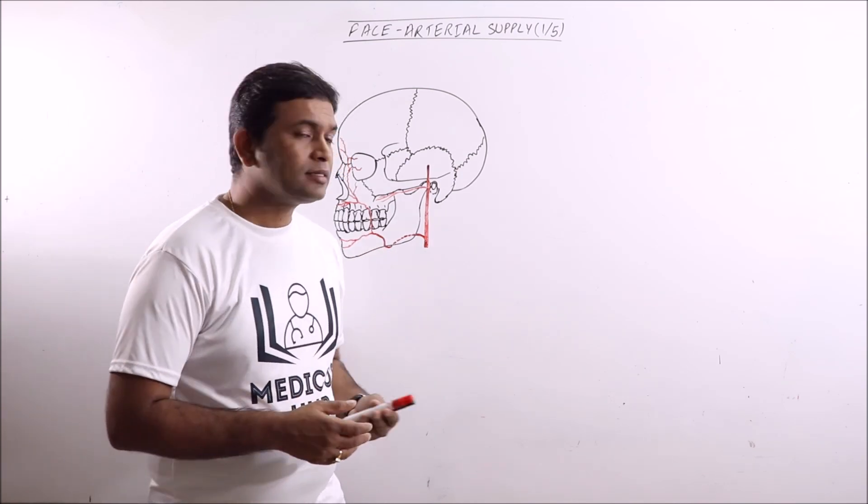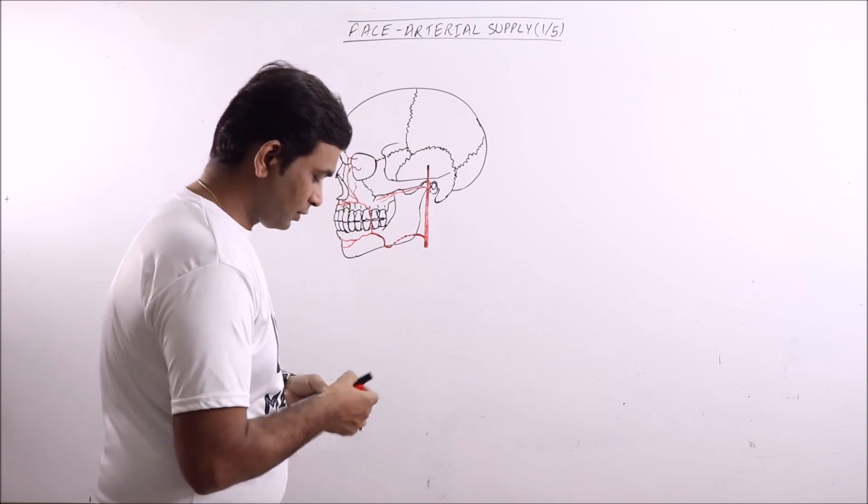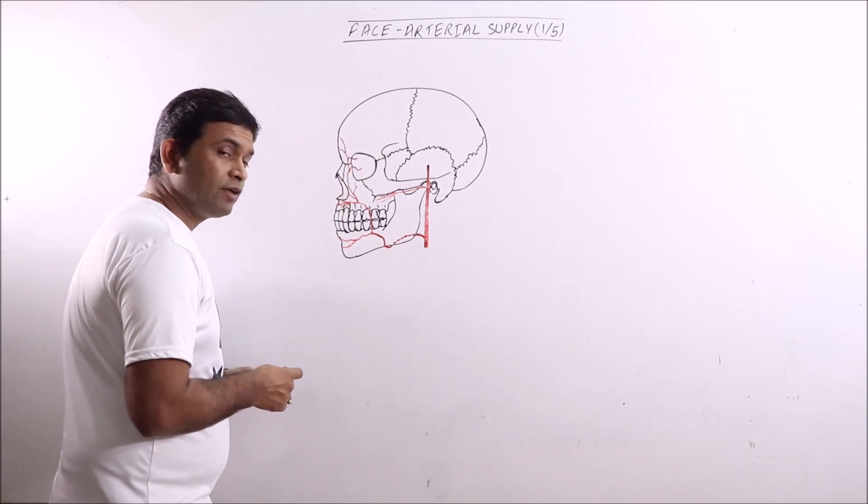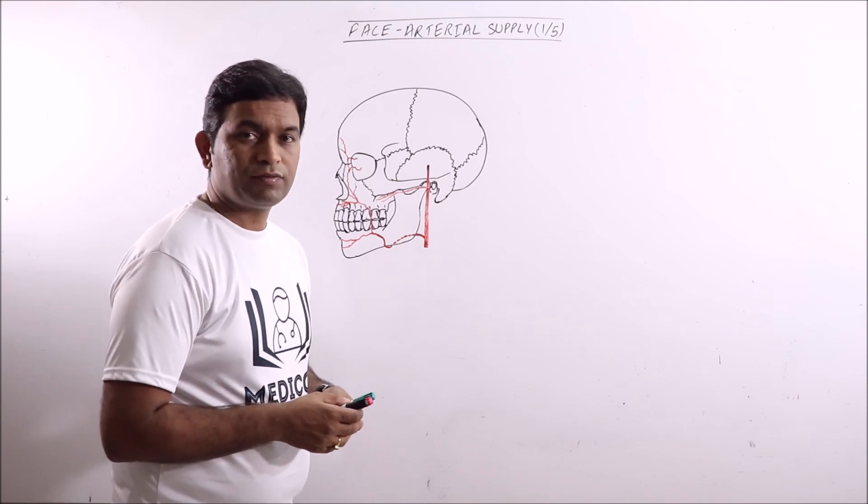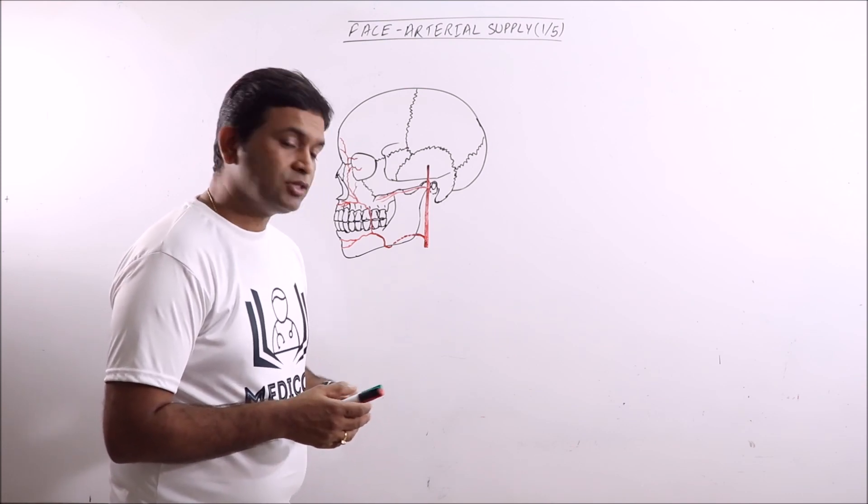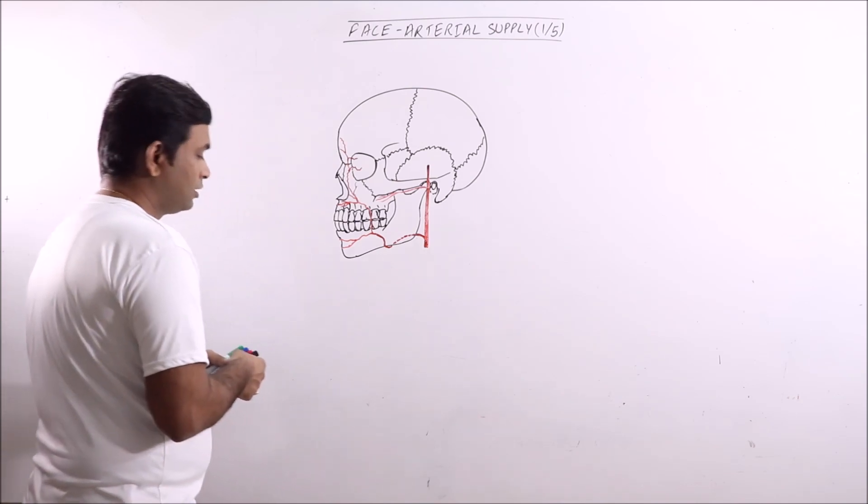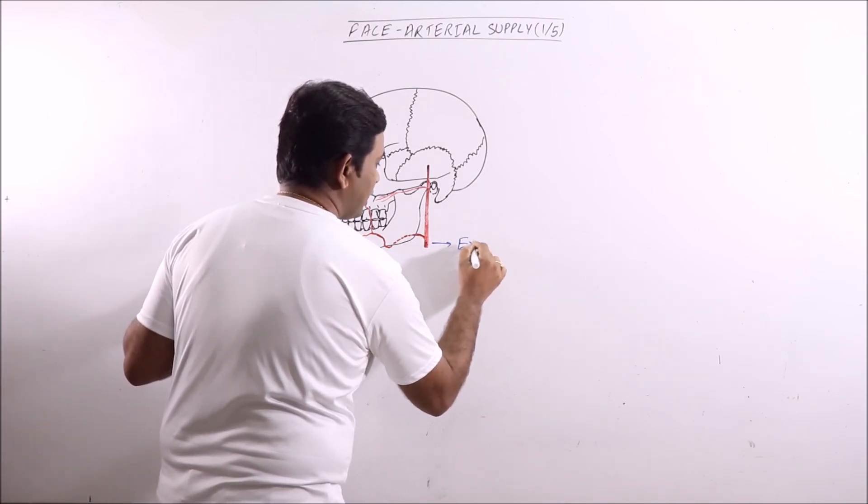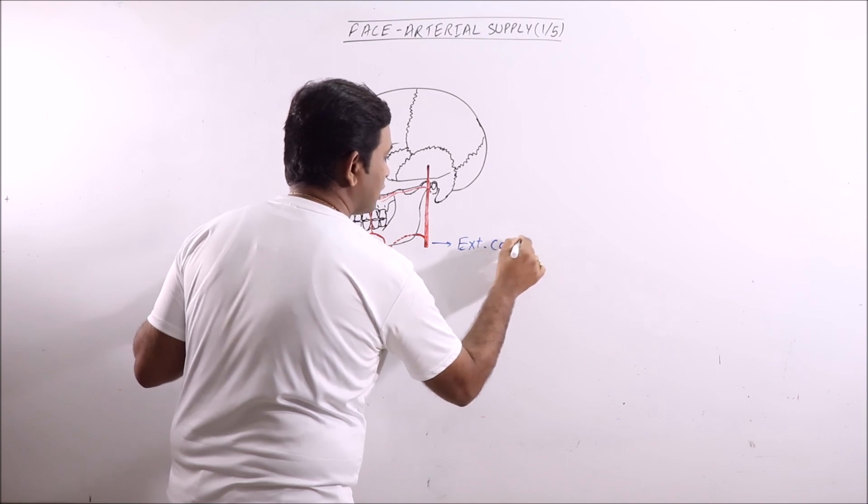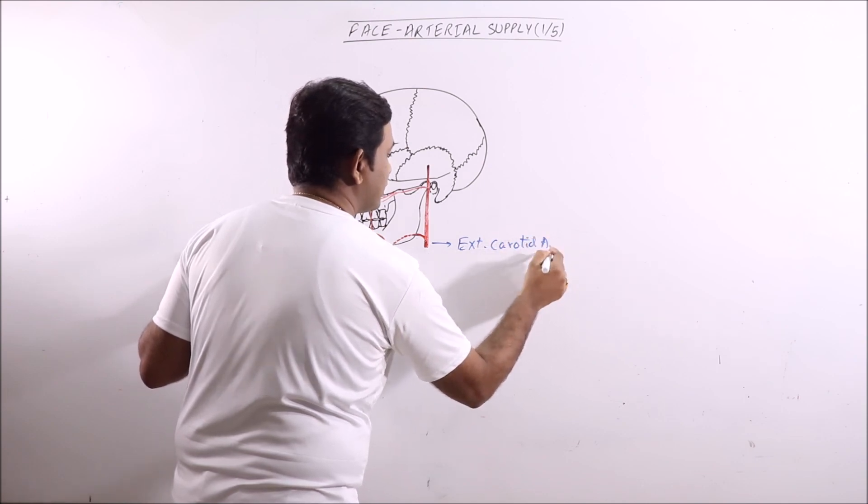Now the arterial supply of face. Arterial supply of face is mainly contributed by the facial artery, transverse facial artery, and some cutaneous branches of the face. Now this is external carotid artery.